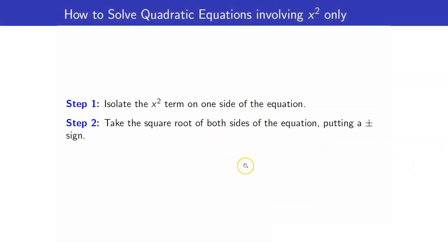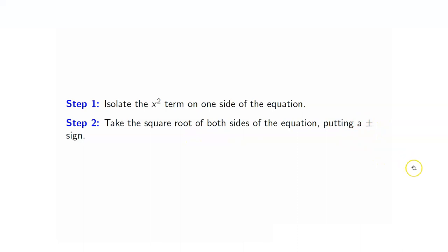In solving quadratic equations involving x squared, we just isolate the x squared term on one side of the equation, and we get the square root of both sides, but we have to put a plus or minus sign.